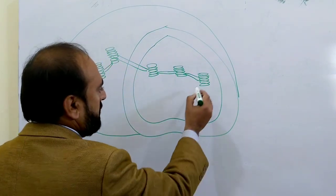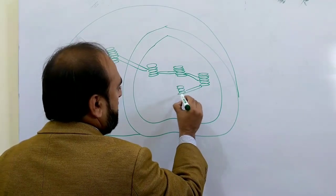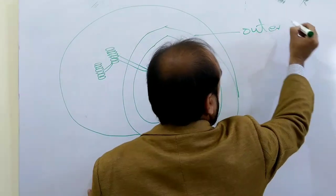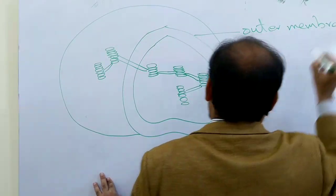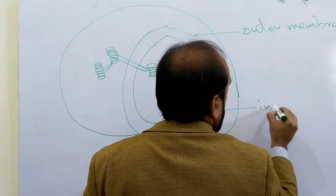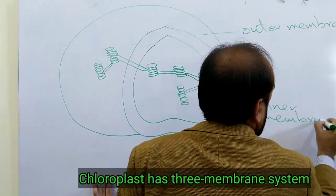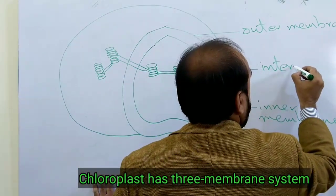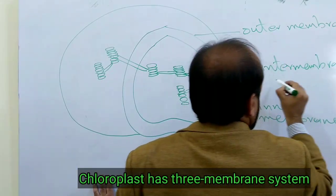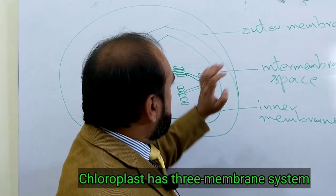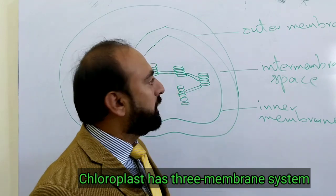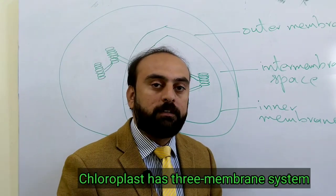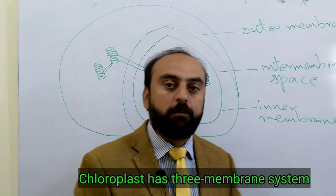If we talk about the structure of chloroplasts, we have an outer membrane, then there is an inner membrane, and between these two membranes is a space called the intermembrane space. This outer membrane or envelope is freely permeable to the transport of molecules, whereas the inner membrane is only selectively permeable to the transport of molecules like sugars.